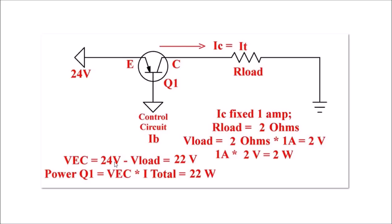VEC equals 24 volts minus V load, which is 2 volts, equals 22 volts. The power dissipation of Q1 is VEC times I total - 1 amp times 22 volts - is 22 watts. You're not using much power at all in the load, only 2 watts. You are heating up Q1 like crazy. You can't change the current - that's why they call it a constant current source. But if you're using a ridiculously high input voltage relative to your load resistance, this thing is going to get red hot.